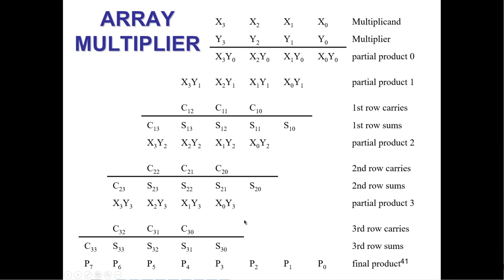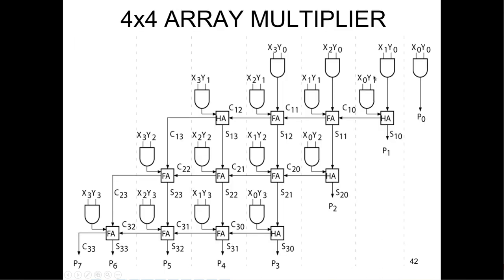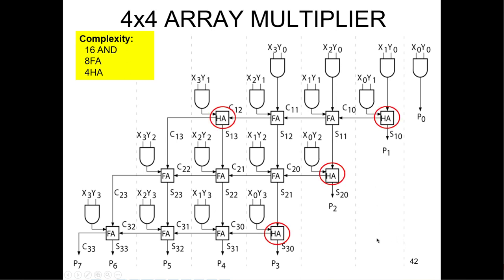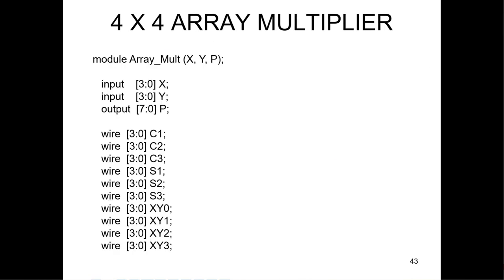The array multiplier — this is really important. You need to know how to look at this and see how it makes sense. Here's what it looks like when you implement it with gates: you can use AND gates and half adders and full adders. The half adder just doesn't have a carry in — that's really the only difference. Then you determine the critical path. For a four-by-four array multiplier: 16 AND gates, 8 full adders, and 4 half adders. The critical path is 8 adders plus one AND gate. That can really add up if you have a lot of bits.